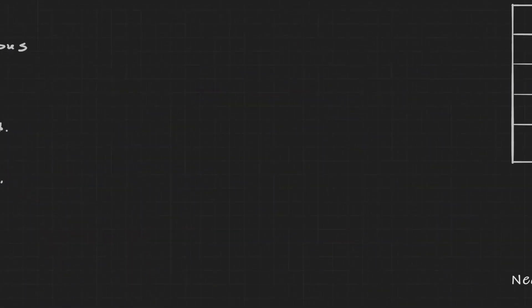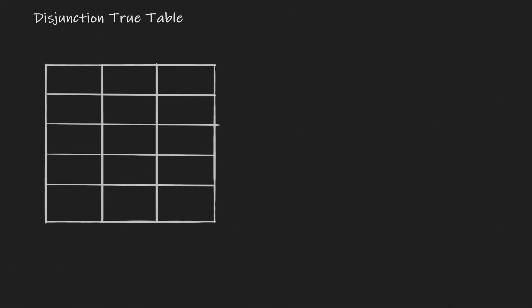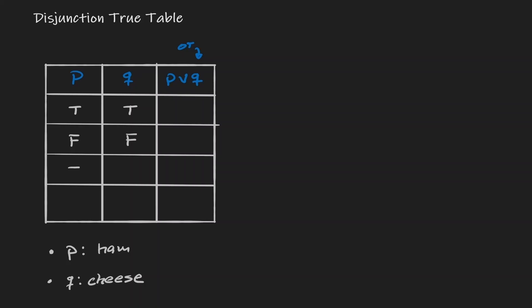Now let's take a look at the disjunction truth table. Again, my first row will have both statements labeled P and Q. Using the same scenario — P stands for ham and Q stands for cheese — but now we're joining them with the word 'or,' so this will look like P or Q. The truth tables always start the same way: I list the four combinations — both true, both false, first true and second false, or first false and second true.